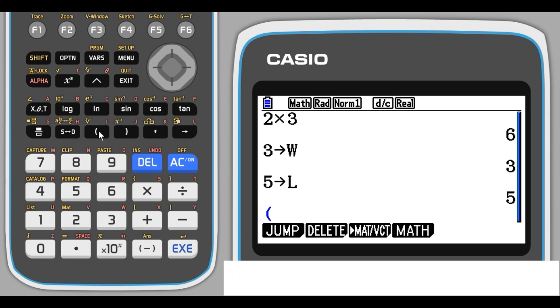So, open brackets, alpha W plus alpha L, close brackets, times 2, EXE. And that's given us the perimeter of the rectangle.